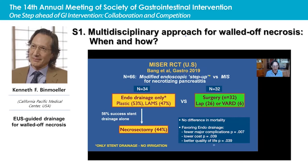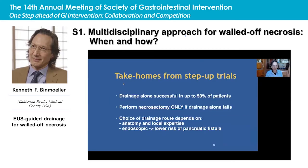A second US randomized controlled trial compared a modified endoscopic step-up approach — drainage only using either plastic stents or LAMS — versus minimally invasive surgery, without irrigation first. Again, the success rate for stent drainage alone was very high at 56%, meaning about half of patients did not require direct necrosectomy, with results favoring the endoscopic approach. The take-home messages from the step-up trials: drainage alone is successful in up to 50% of patients; perform necrosectomy only if drainage alone fails; and choice of drainage route depends on anatomy, cyst location, and local expertise. All things being equal, endoscopic is favored due to lower risk of pancreatic fistula formation.